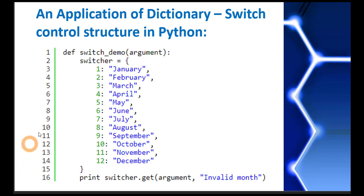For that, we can define a function. I have named my function switch_demo, and this is some argument of my function. You know that we always put a colon here—this is the syntax of the function. Now inside my function, I have made a dictionary, and the name of my dictionary is switcher.